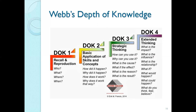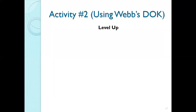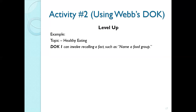If we use Webb's Depth of Knowledge to increase complexity, here's an example. The topic is healthy eating. DOK1: I might say name a food group — proteins, fats, grains, fruits and vegetables. Do you need a high level of understanding of healthy eating to know that? No, it's pretty basic. DOK2: if I show you the food plate with one food group missing and ask which one is missing from this meal — would you need a higher level of understanding to answer that? Absolutely.